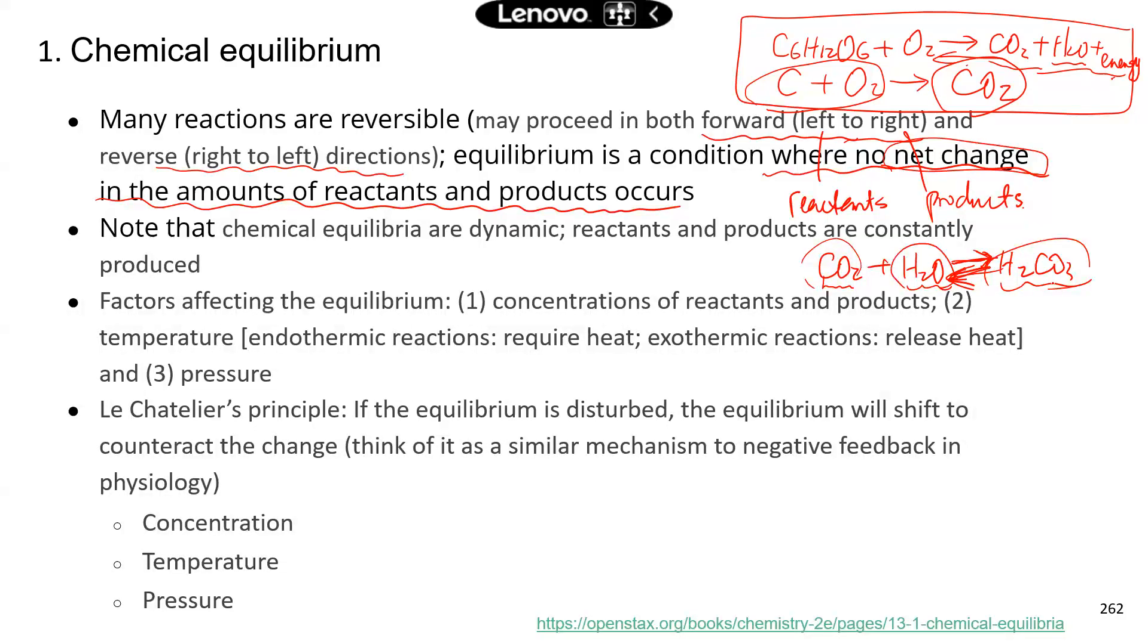Now there are some factors that can affect equilibrium. For instance, concentrations of reactants and products. How much you have for reactants or products can affect equilibrium, and we'll talk about that in detail. Temperature, that's another important factor, especially when the chemical reaction either absorbs heat, requires heat, or it releases heat. So when that happens, temperature can have a big impact on equilibrium. And the last factor is pressure.